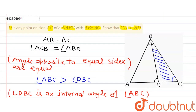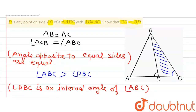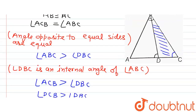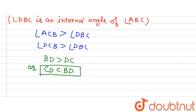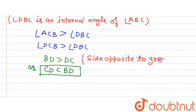Because the side opposite to the greater angle is longer, we will have BD greater than CD, and this is what we were required to prove. Or we can write it as CD less than BD. The reason here is: side opposite to the greater angle is longer.